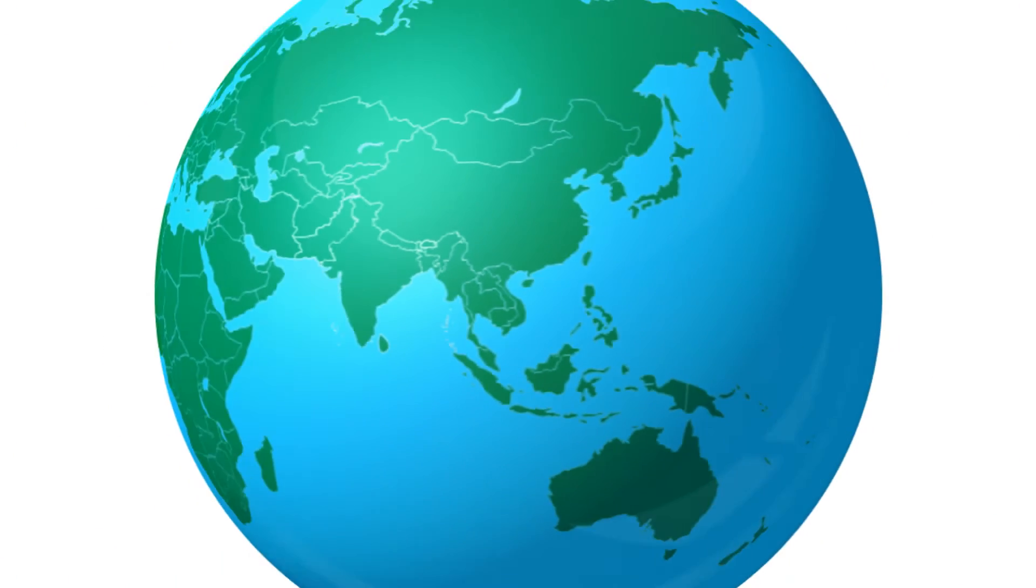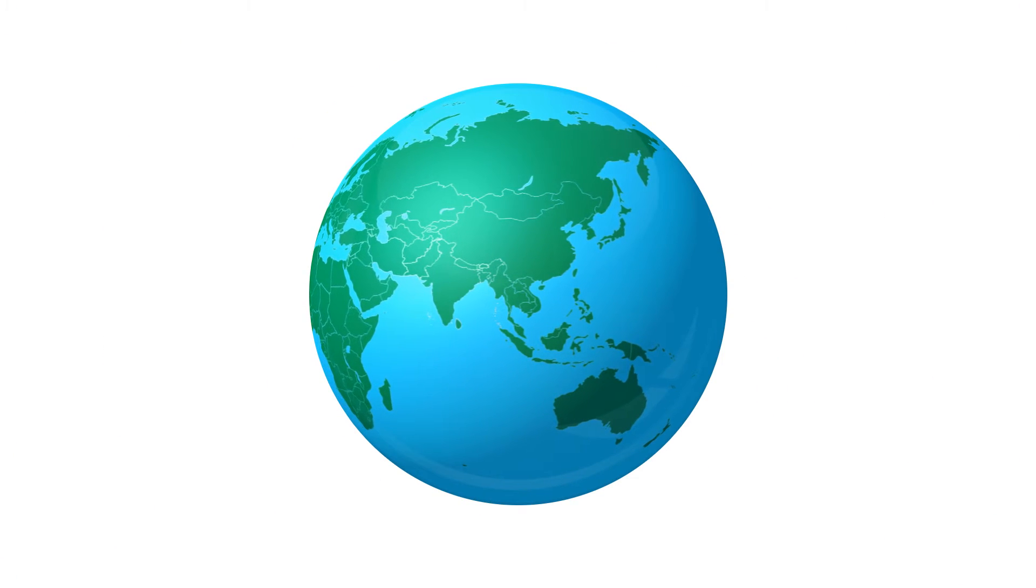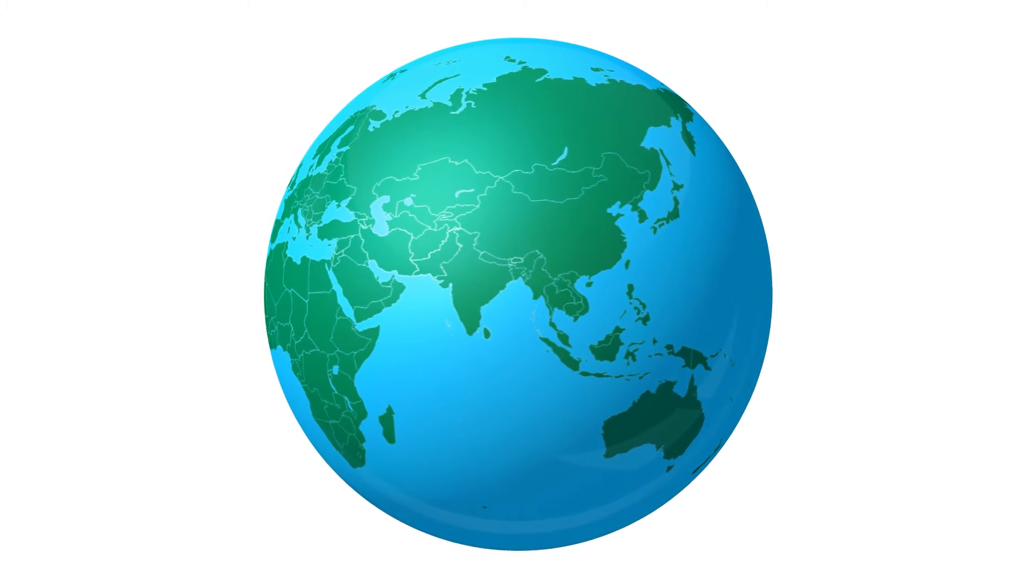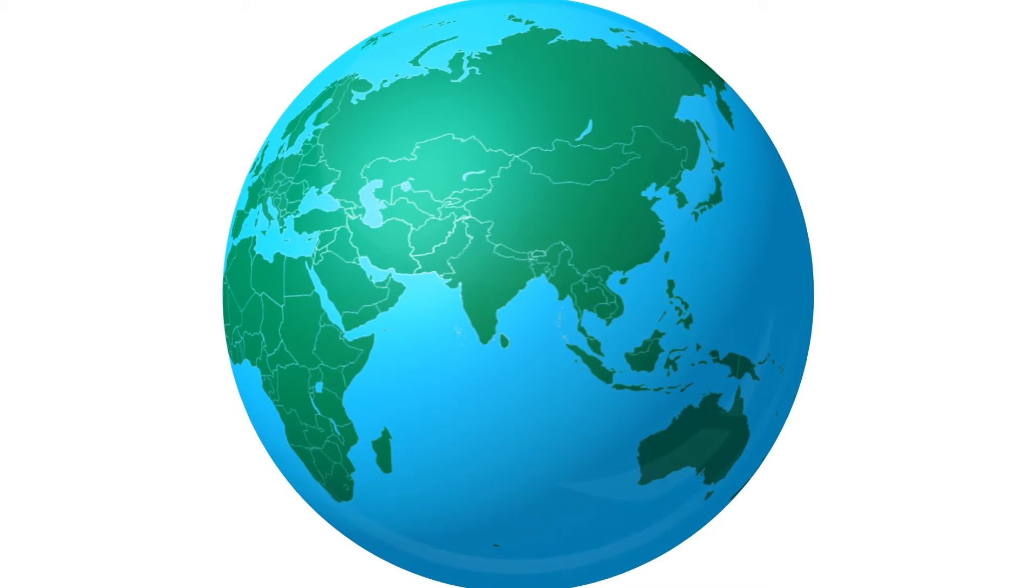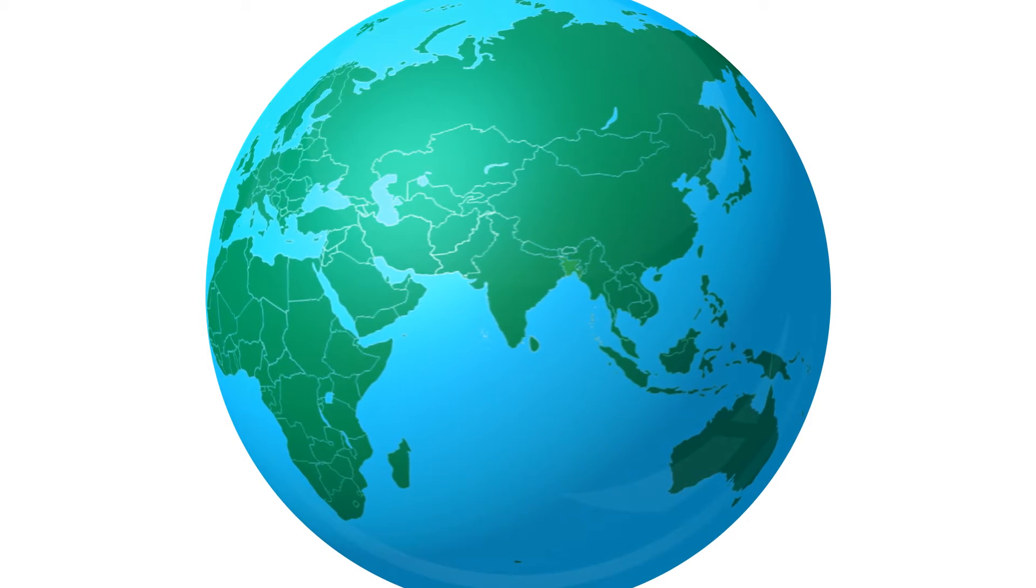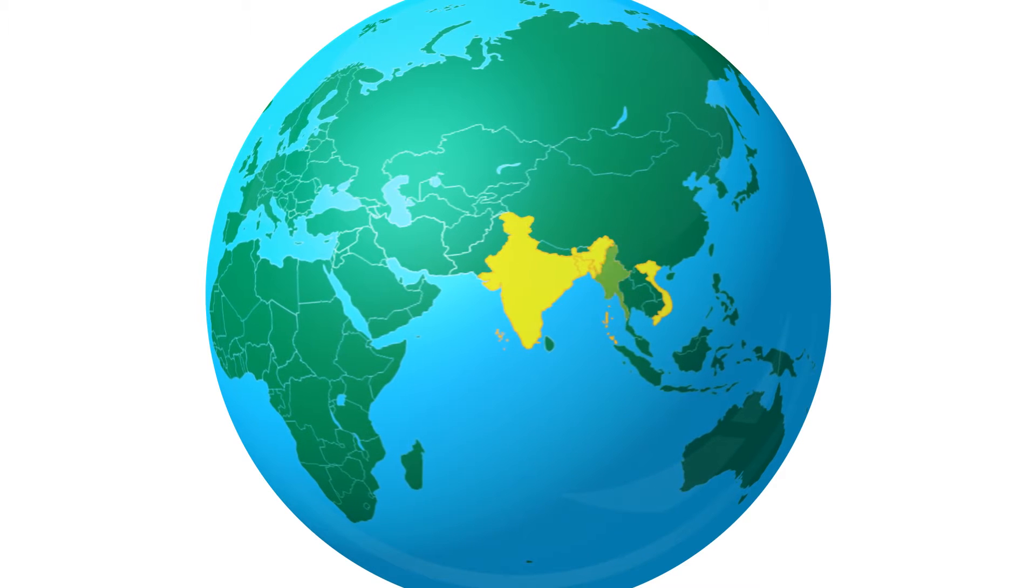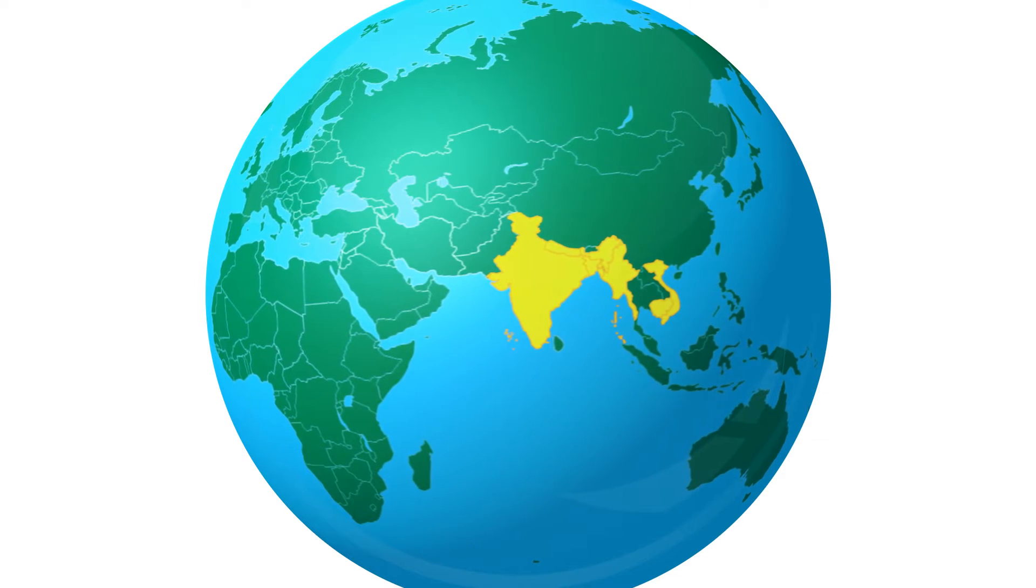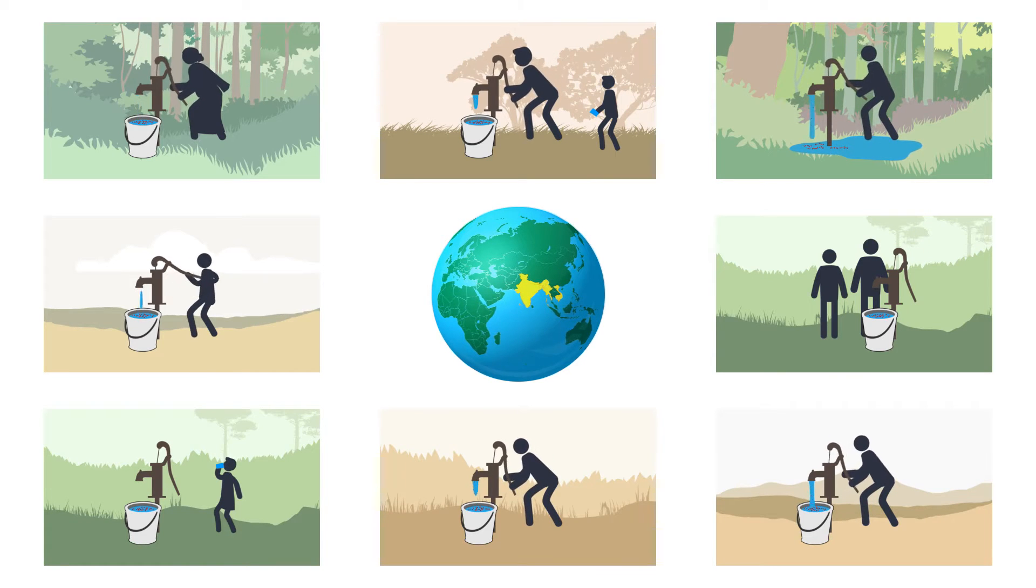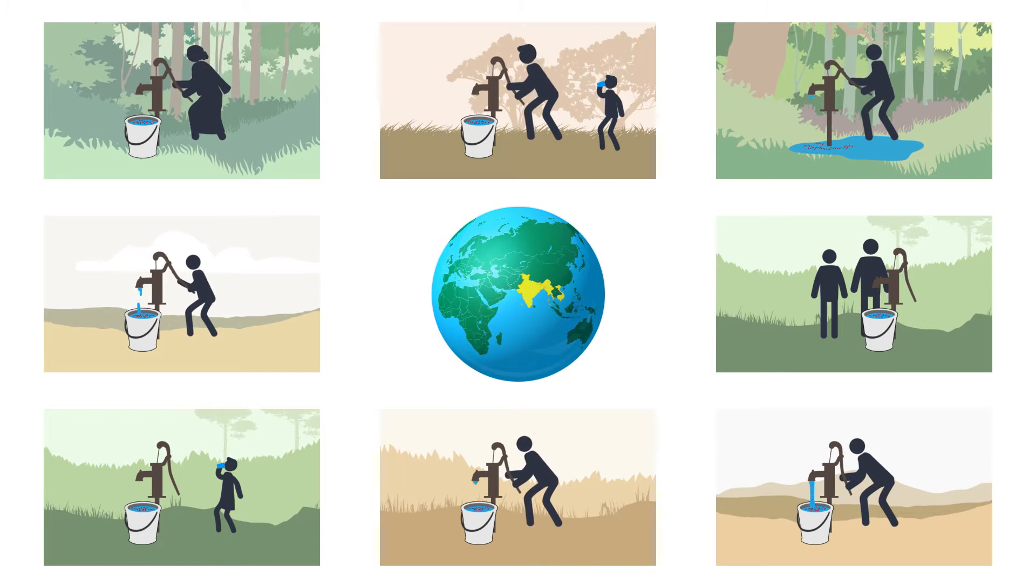150 million people on the planet ingest toxic amounts of arsenic each day because it is naturally present in their drinking water. The vast majority of these people live in South Asia, in poor rural areas of Bangladesh, India, Vietnam, Myanmar, Nepal, and Cambodia, where hand pumps installed on tube wells are their main source of water supply.